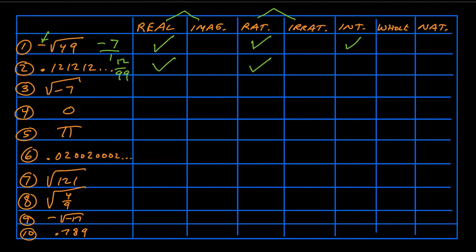For number three, square root of negative 7 — you can see there's a negative underneath the square root sign. When you take the square root of a negative number, you get an imaginary number, which you'll learn about in algebra 2 or further in your math studies. For the purposes of this video, it's not real — it's imaginary. That's the only category it falls into.